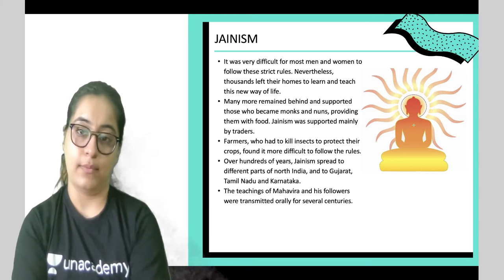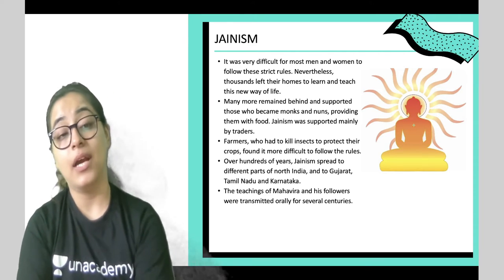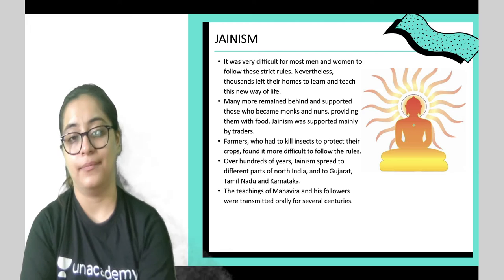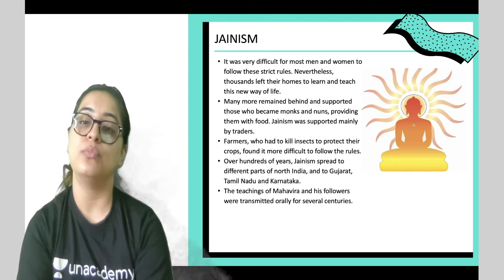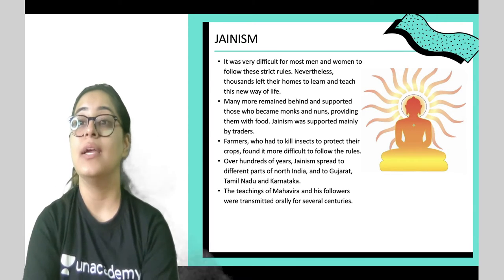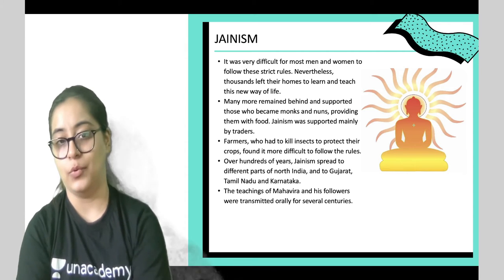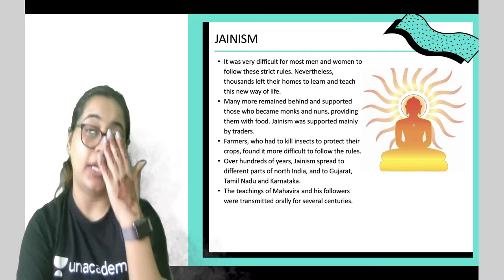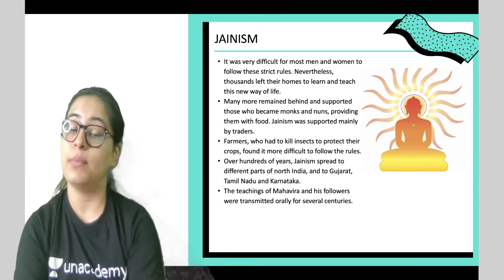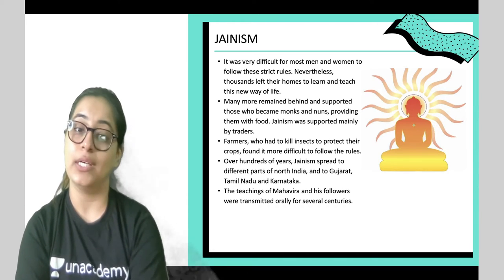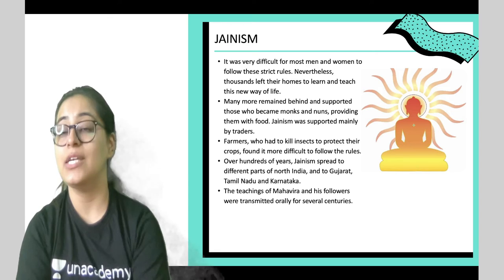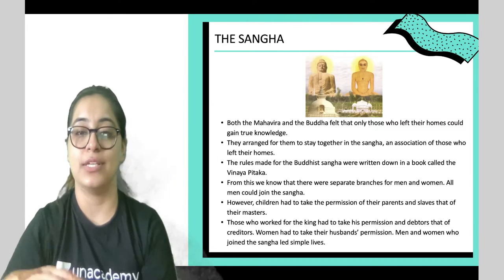It was very difficult to follow Mahavira's strict rules, but many people left their homes to learn and teach this way of life. Jainism was supported mainly by traders. Farmers found it more difficult to follow since they had to kill insects to protect their crops. Over hundreds of years, Jainism spread to different parts of North India, Gujarat, Tamil Nadu, and Karnataka. These were Mahavira's teachings and were distributed over several centuries.